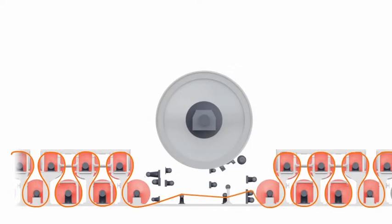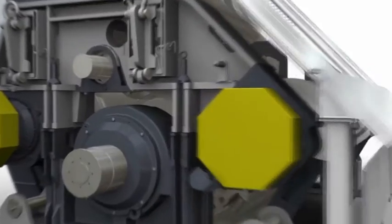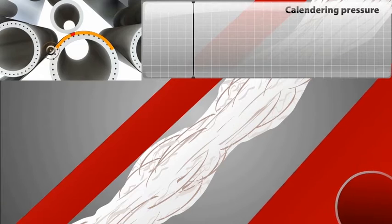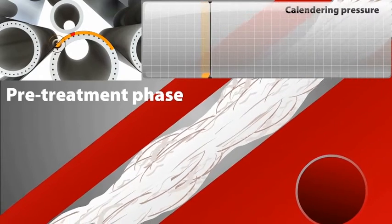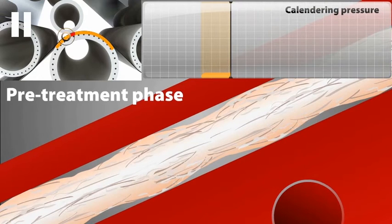Valmet's metal belt calendar features a one meter long machine direction processing zone for both sides of the web. Because of the high tension of the metal belt, the boiling point of water inside the web is uniquely elevated up to 130 degrees Celsius.